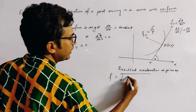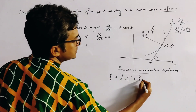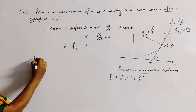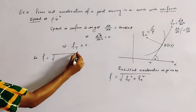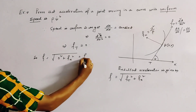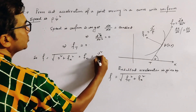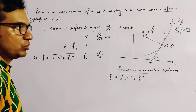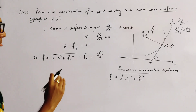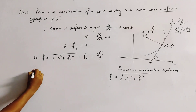The resultant acceleration f is given by f = √(fₜ² + fₙ²). Since fₜ = 0, we get f = fₙ = v²/ρ. Now we calculate the value of ψ̇.